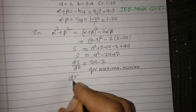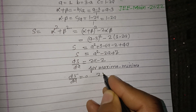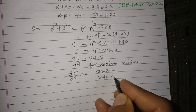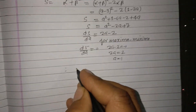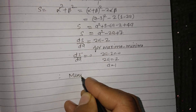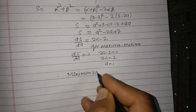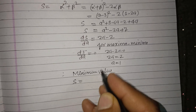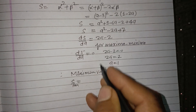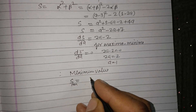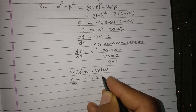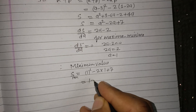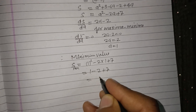For maximum or minimum, setting dS/da = 0: 2a - 2 = 0, therefore a = 1. The minimum value is S_min = (1)² - 2(1) + 7 = 1 - 2 + 7 = 6.